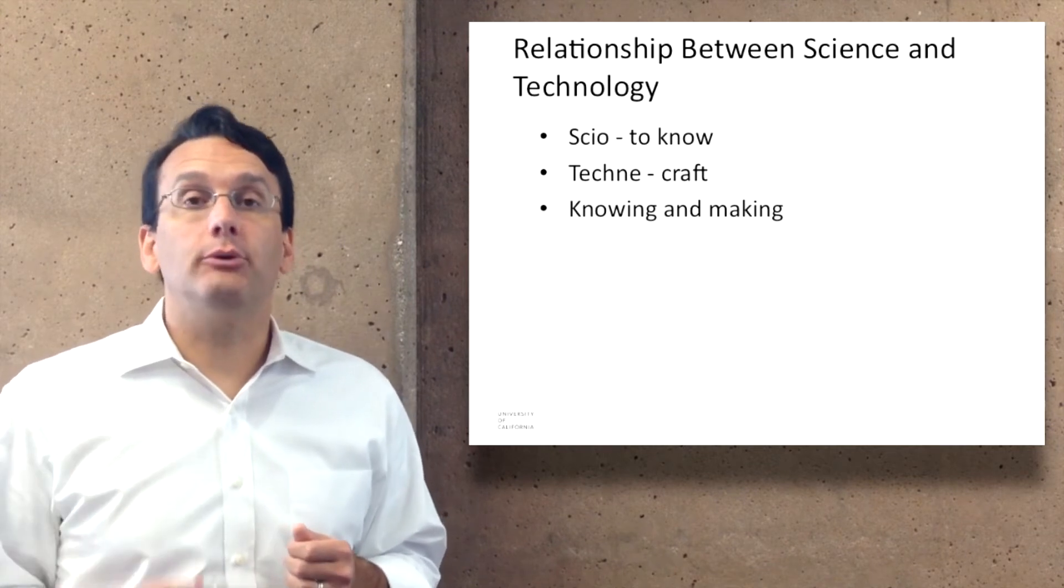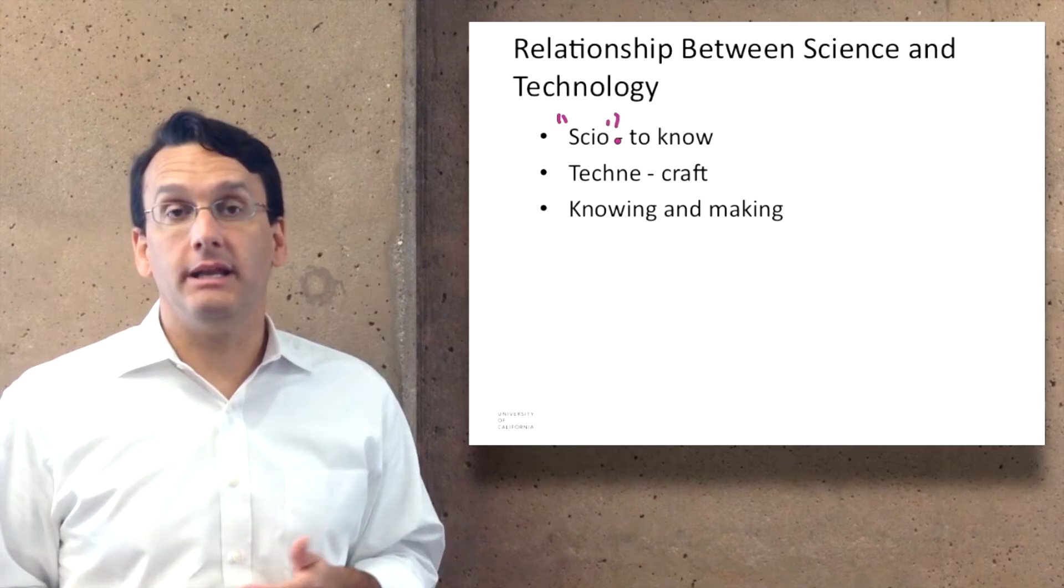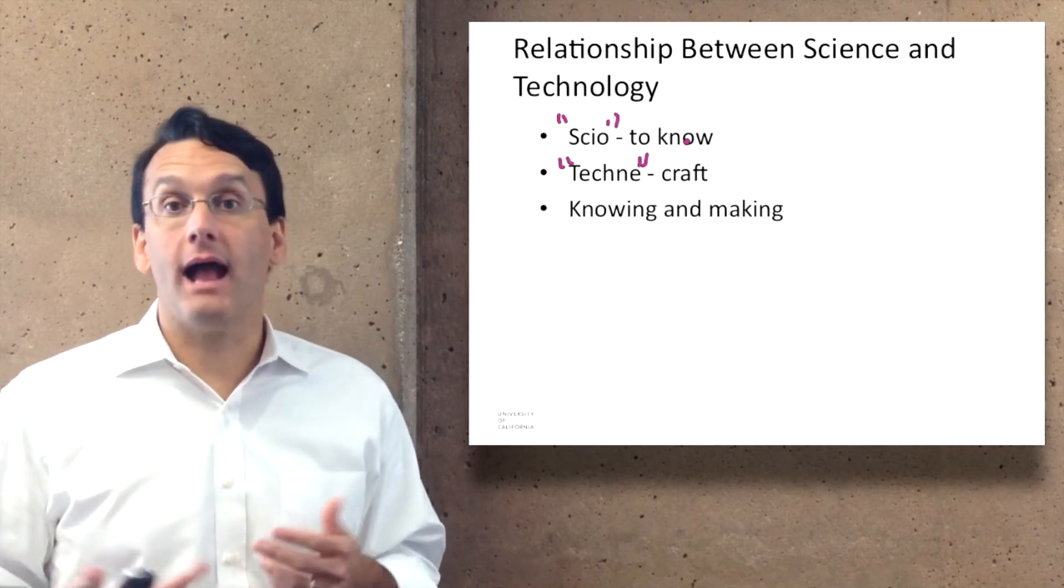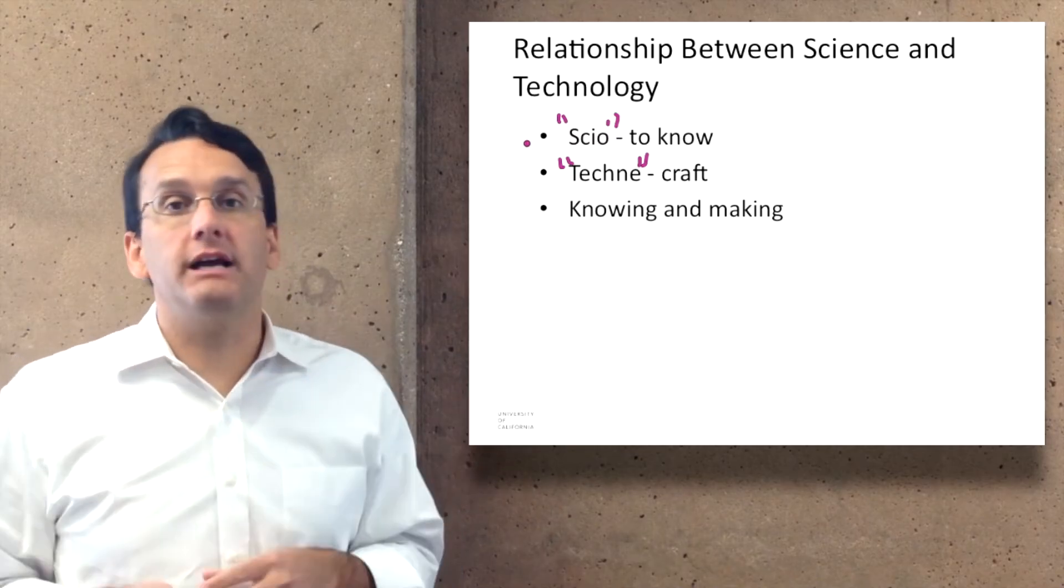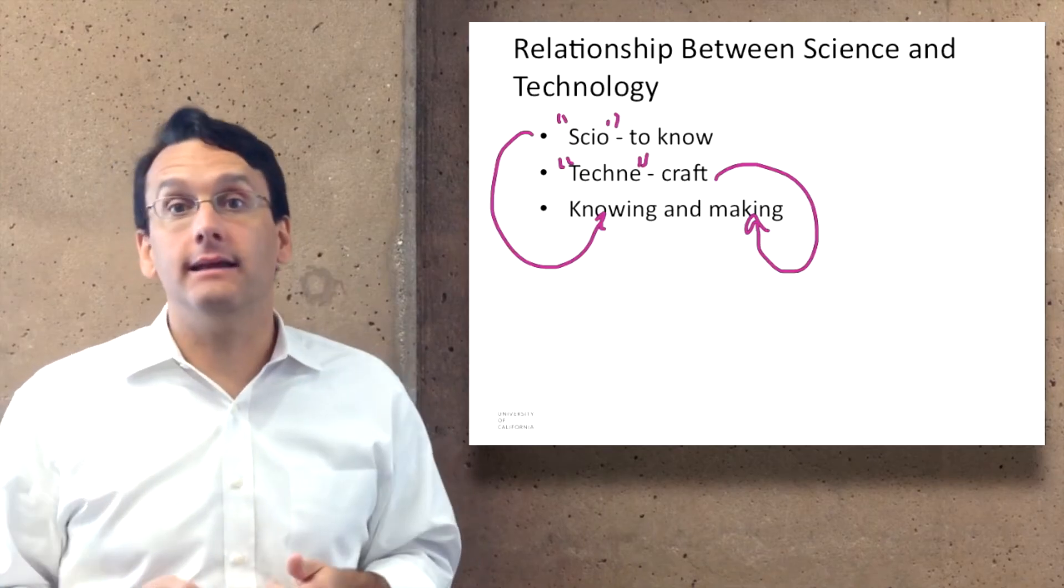Another relationship is the relationship between science and technology. Science comes from a Latin word meaning 'to know' and technology comes from a Greek word meaning 'craft,' and so the difference is that science is about knowing and technology is about making things.